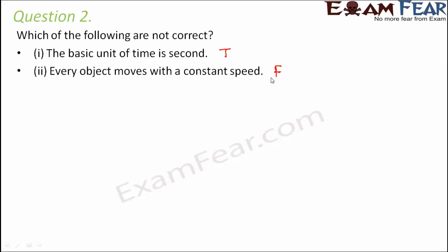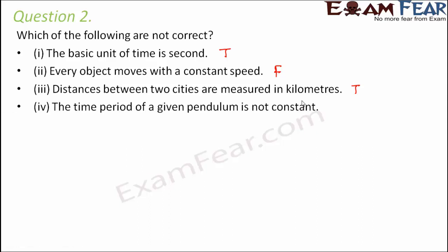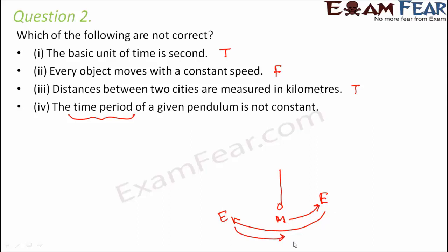At different intervals of time the speed is changing, so non-uniform motion is where an object sometimes moves slowly and sometimes fast. Distances between two cities are measured in kilometers - that is true, because cities are far apart and kilometer is a bigger unit of distance. The time period of a given pendulum is not constant - time period is the time taken to complete one oscillation.